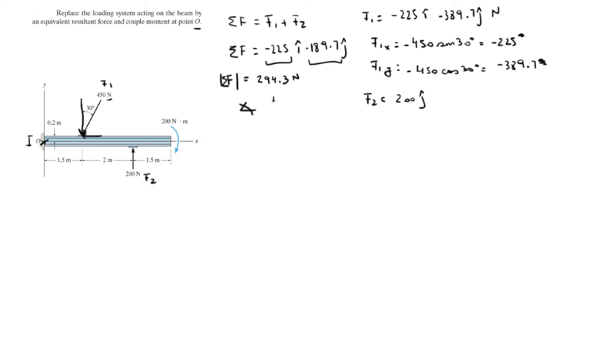And the angle is given by the tangent inverse of 189 over 225, which comes out to be 40.13 degrees. And since it's negative on the X and negative on the Y, then you know it's this angle. So, if they want the angle with respect to the X, remember you have to add 180. Don't forget.